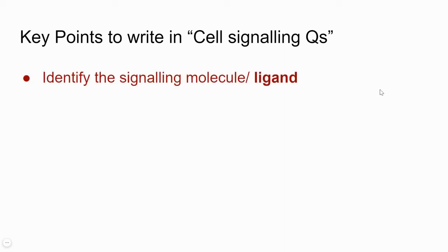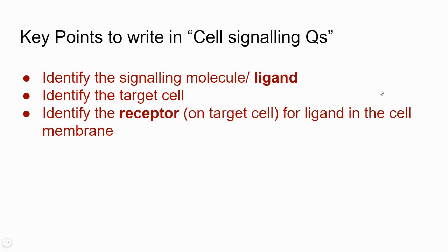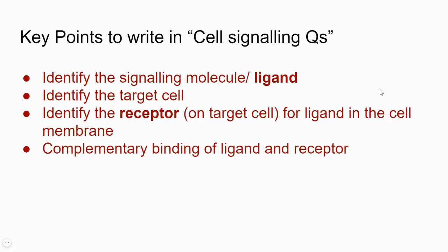To answer these questions, first identify what is your signaling molecule or ligand in the question. Second, identify the target cell. After identifying the target cell, immediately mention that it is the cell which has the receptors — that earns you another mark. State that the receptors are on the target cell to receive the ligands or chemical signals. The fourth marking point is always about stating that the receptor has to be complementary to the ligand, otherwise the target cell will not respond. If the target cell responds when the ligand binds, it confirms they are complementary.